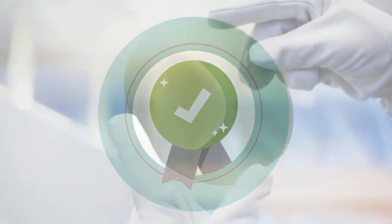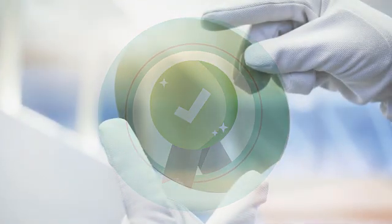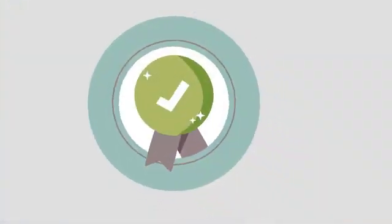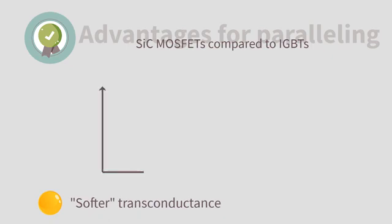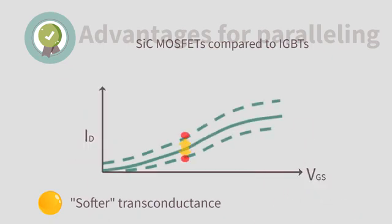So, in summary, even if silicon carbide MOSFETs switch very fast, they have some characteristics that aid with paralleling compared to slower IGBTs. The transconductance is softer, so, for a small change in transconductance or in gate voltage, there is a smaller change in the main current.